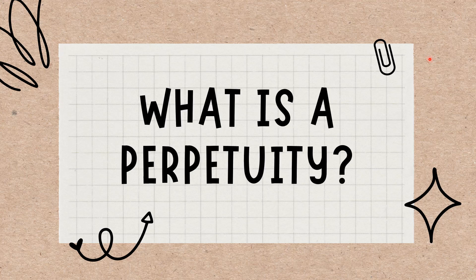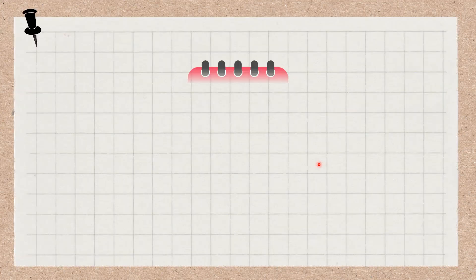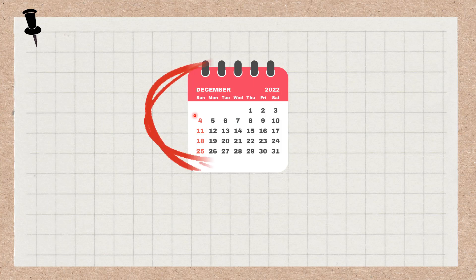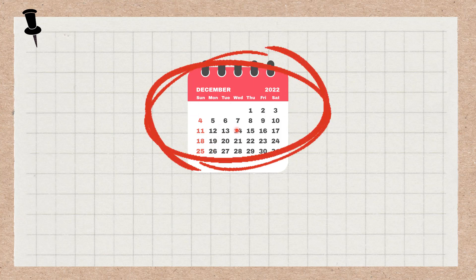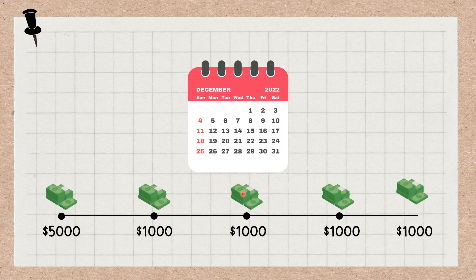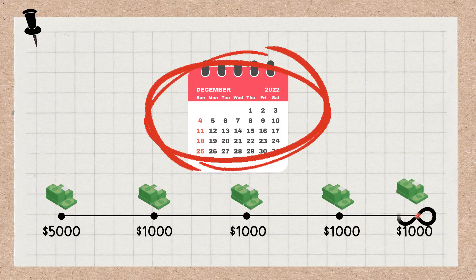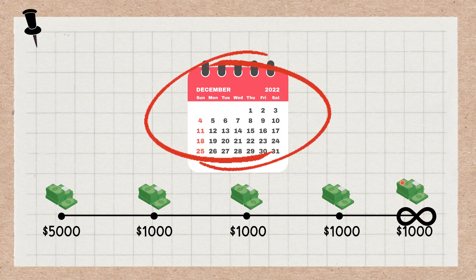What is a perpetuity? A perpetuity is a security that pays for an infinite amount of time. In finance, a perpetuity is a constant stream of identical cash flows with no end. The concept of perpetuity is also used in several financial theories, such as in the dividend discount model.